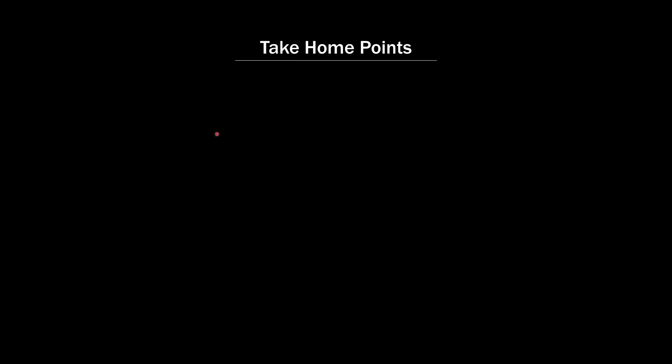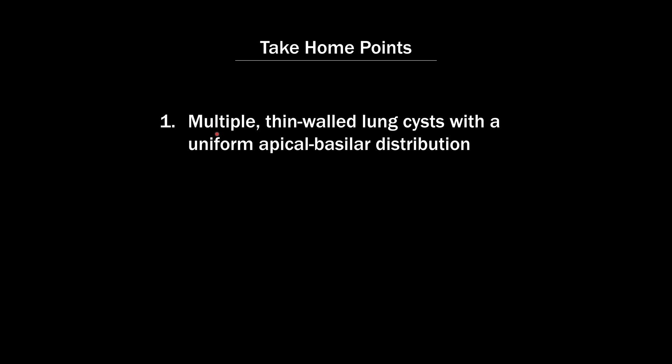Here are my take-home points for radiologists. The first is that the primary manifestation of the disease on chest CT is multiple thin-walled lung cysts with a uniform apical to basilar distribution, meaning they're not upper lobe predominant and not lower lobe predominant — they affect the upper and lower lobes about equally. The cysts are usually less than two centimeters in size, although they can be larger in patients with more severe disease.